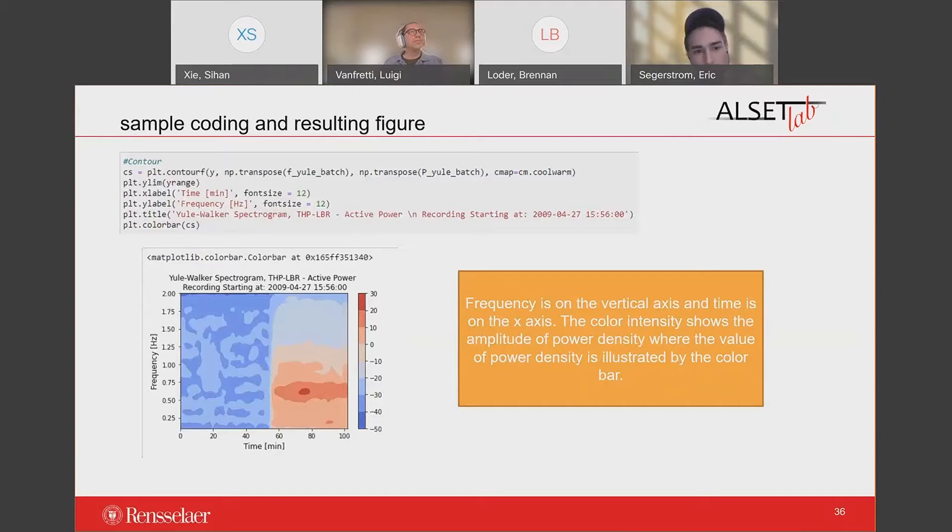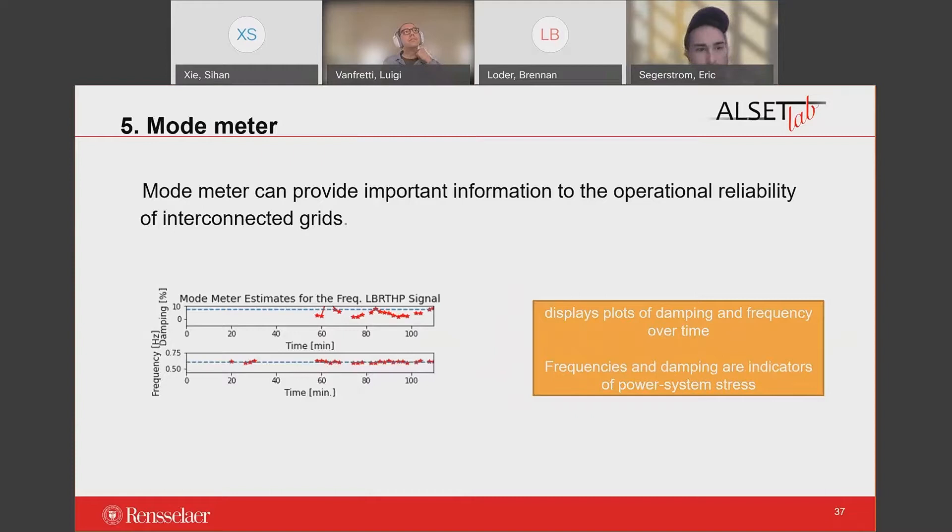The last function that is important to plot is the mode-meter. Because there are too many lines of code, I did not take a screenshot of the code. I only screenshot the graphical result, which displays the plots of damping and frequency versus time. The mode-meter can provide crucial information to the operational reliability of interconnected grids. Since system damping can lead to power system oscillation, the mode frequencies and damping are always desired, and they are remarkably useful indicators of power system stress.